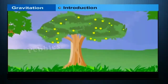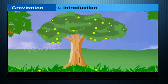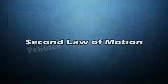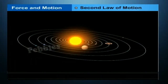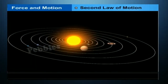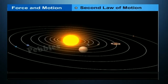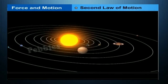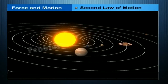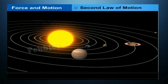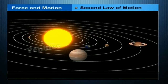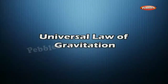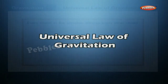We shall discuss the motion of objects under the influence of gravitational force on the earth. According to Newton's second law of motion, a force is needed to change the speed or the direction of motion of an object. We always observe that an object dropped from a height falls towards the earth. We know that all the planets go around the sun.